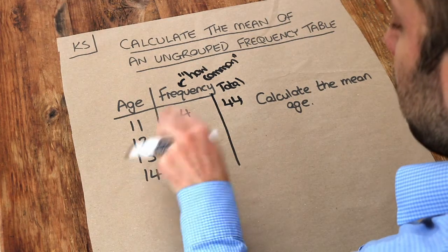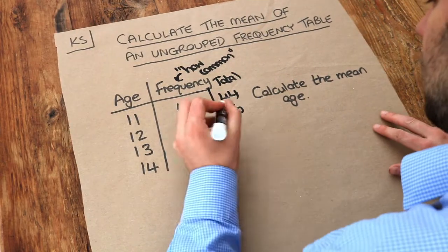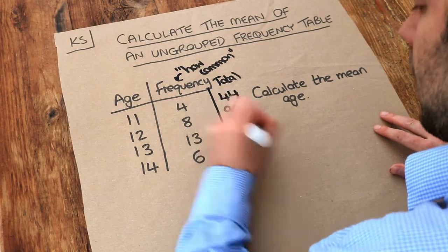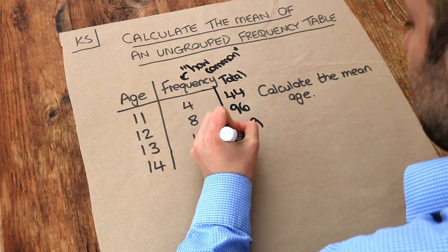Next we've got eight times 12 and that is 96. Next we've got 13 times 13 and that is 169. And next we've got 14 times 6 which I'm going to do on the calculator is 84.